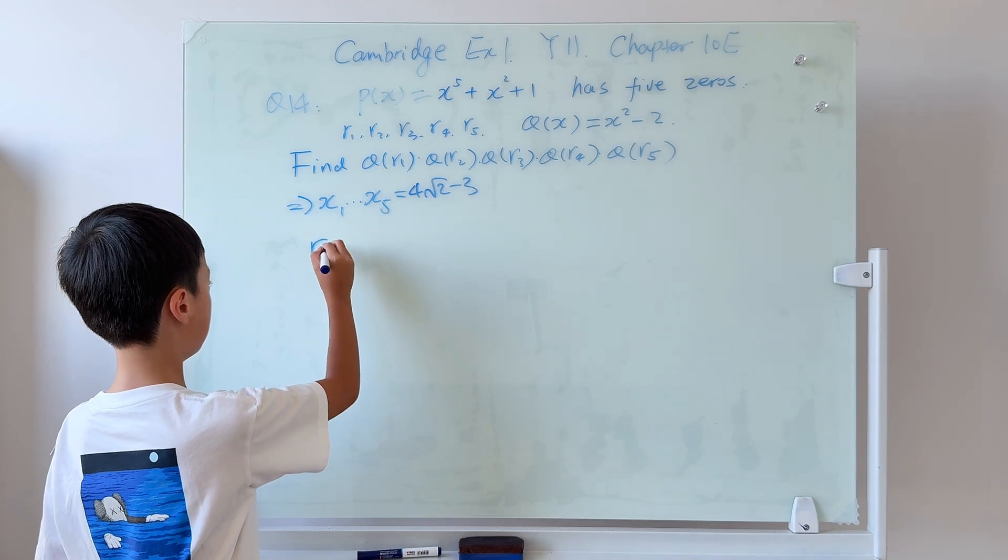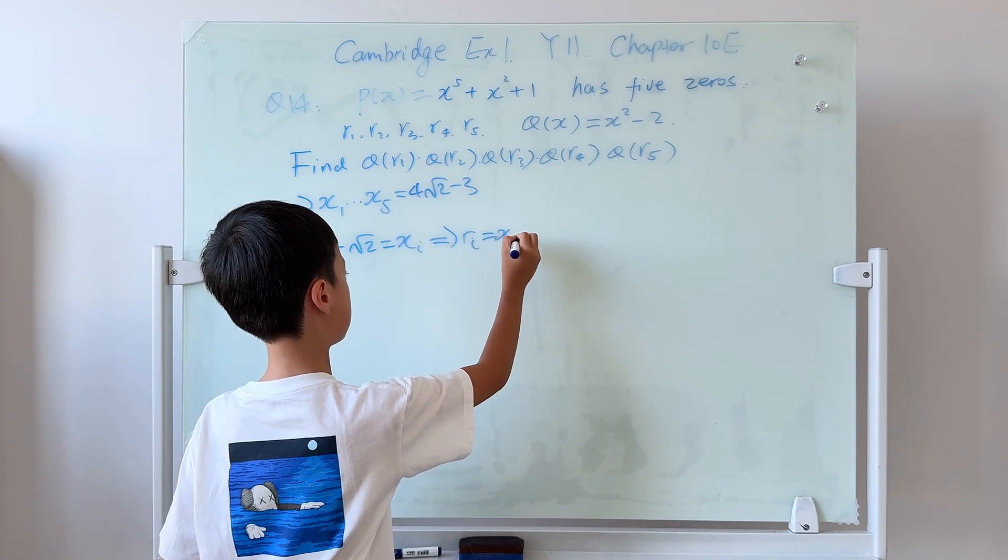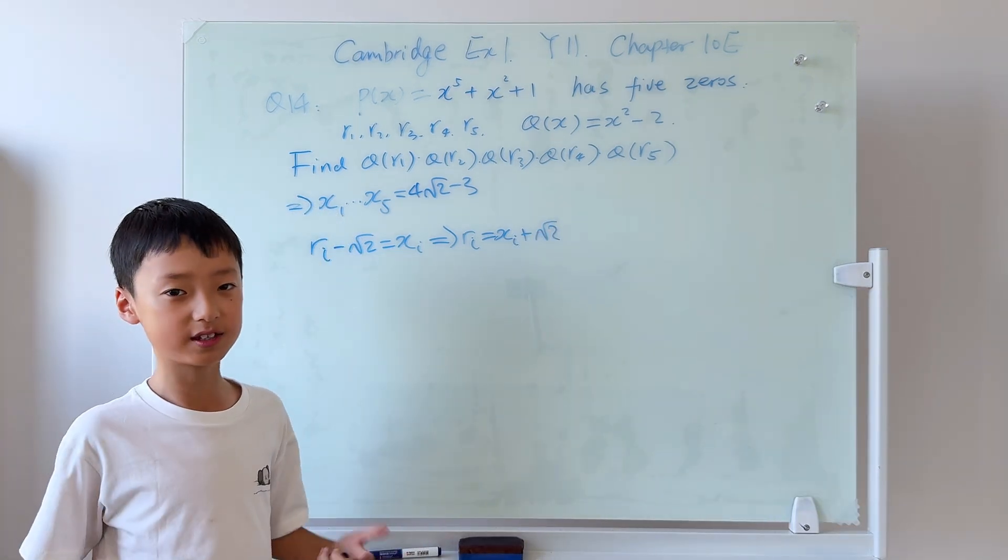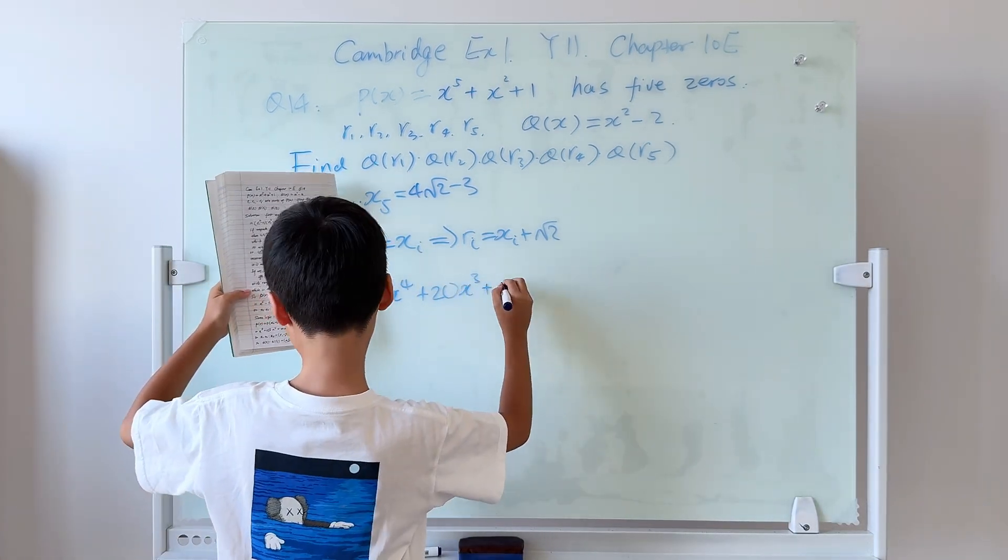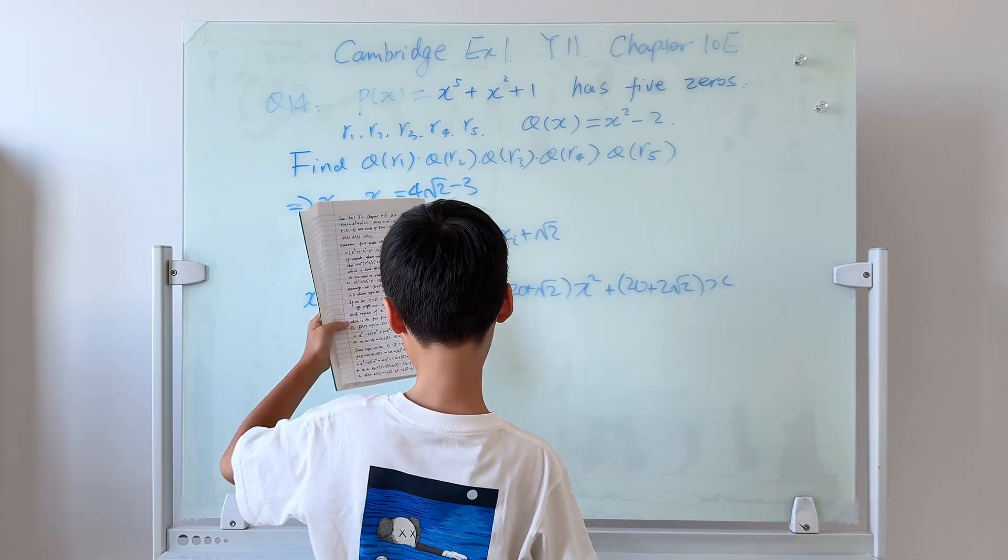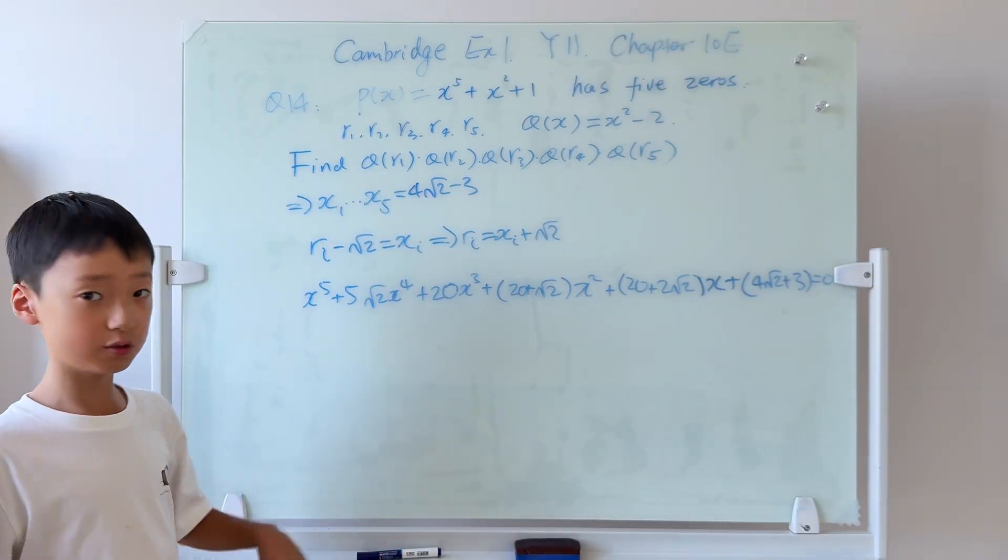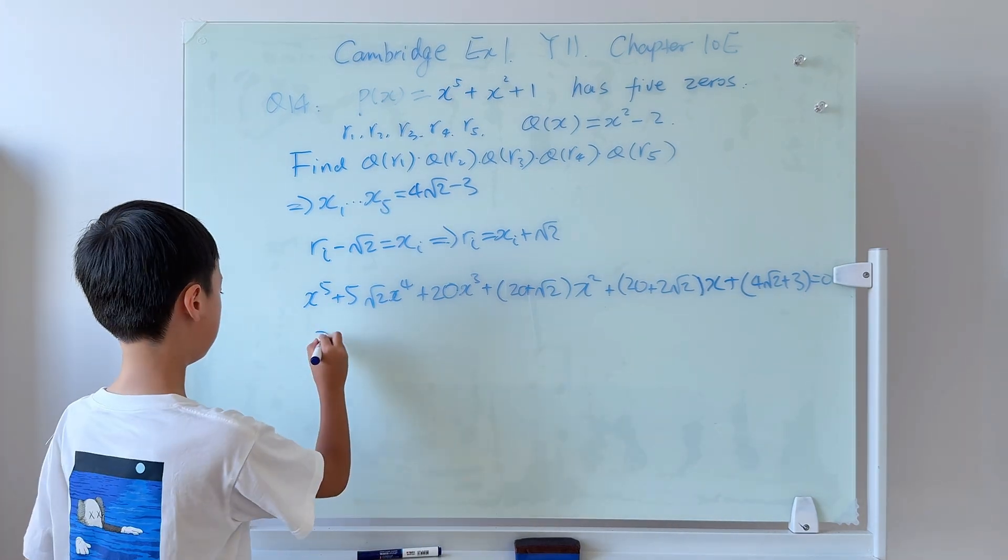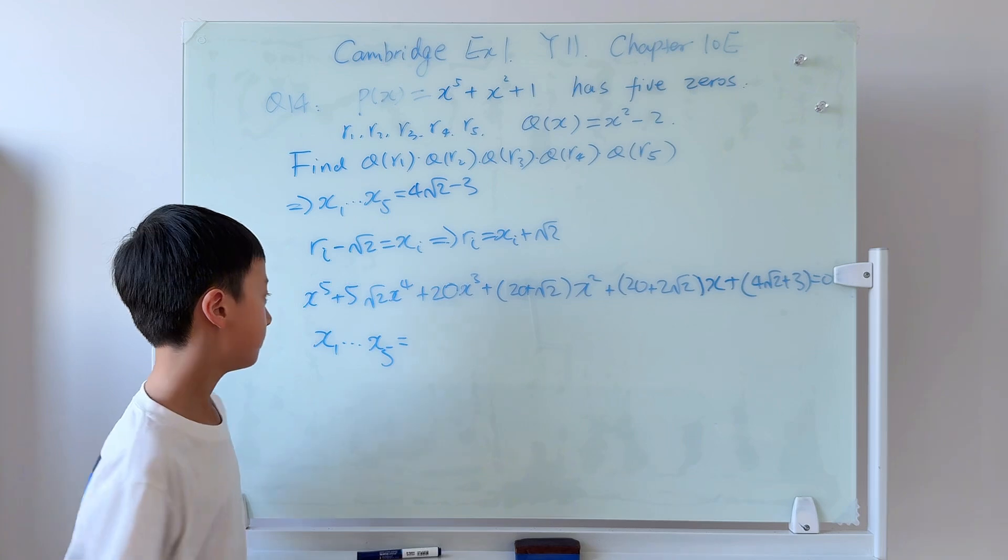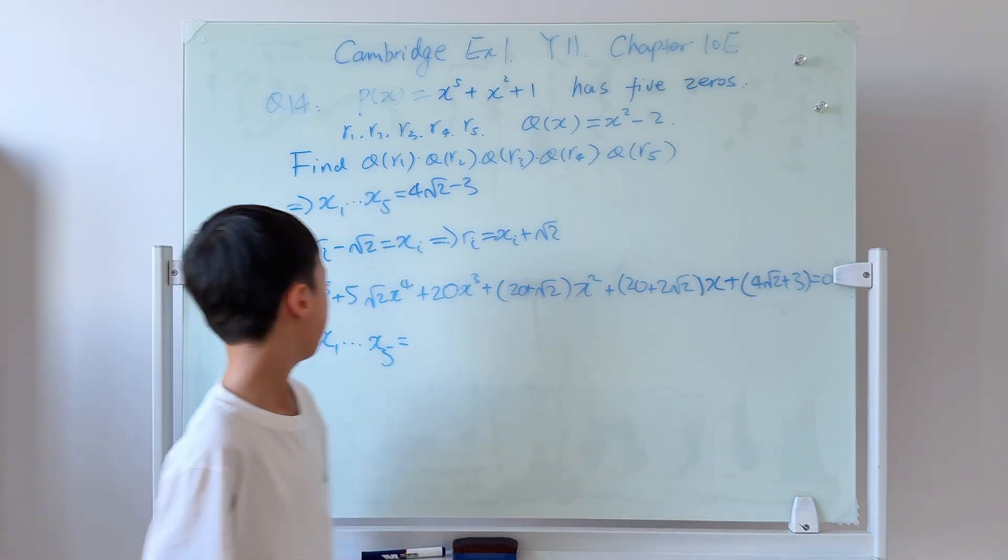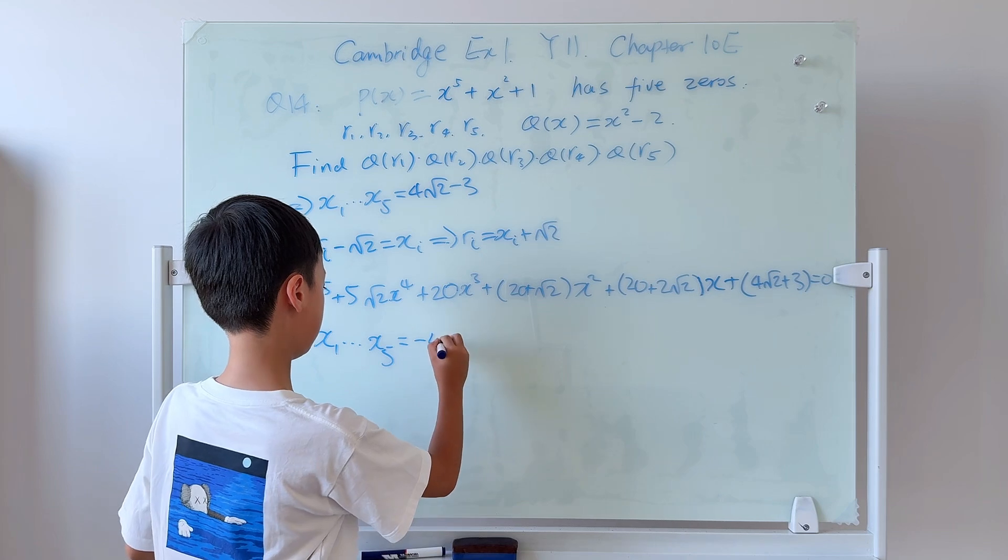Using the same logic, we can let ri minus square root of 2 equals xi. So ri equals xi plus square root of 2. And if you guys unpack this by yourself, then it becomes negative one. So now we can do the same thing. And x1 all the way to x5 for this one is the same thing as that, but just negative. So then it becomes negative this term over a, which is still 1. If you put the negative in the brackets, then it just becomes this.